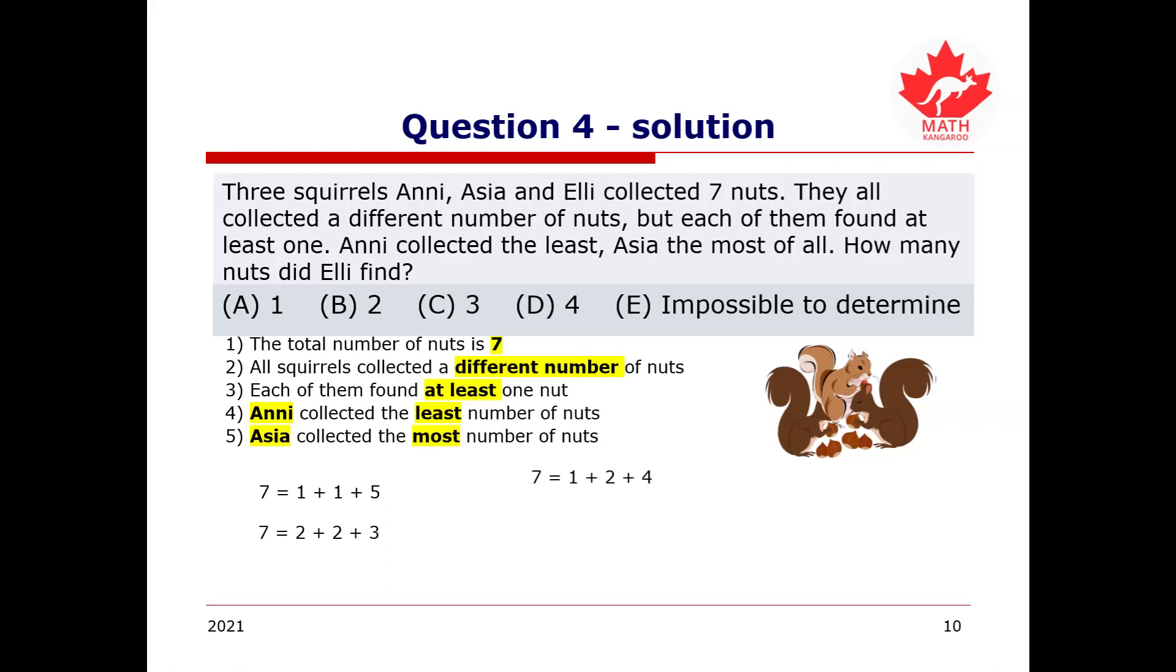Now, there are many combinations of numbers to get the sum of seven. For examples, we have one plus one plus five, or two plus two plus three. We can also have one plus two plus four. However, the first two combinations don't work, as they have same numbers and conflict with clue number two here, as we know that all squirrels collected a different number of nuts. So, we can rule these out. Therefore, the only one with three different whole numbers that can make up a sum of seven is one plus two plus four.